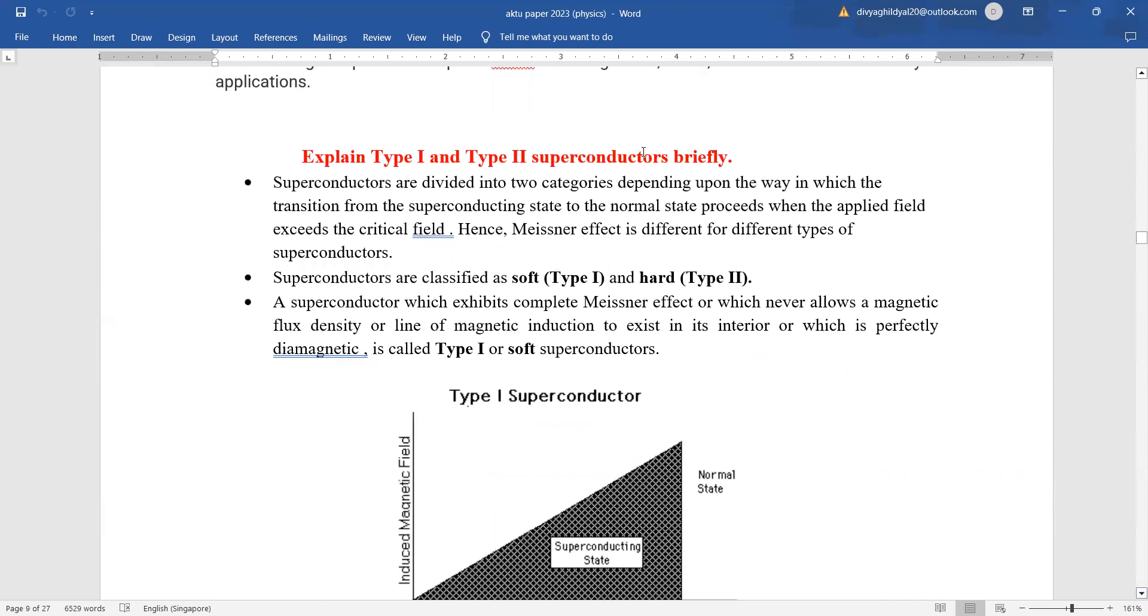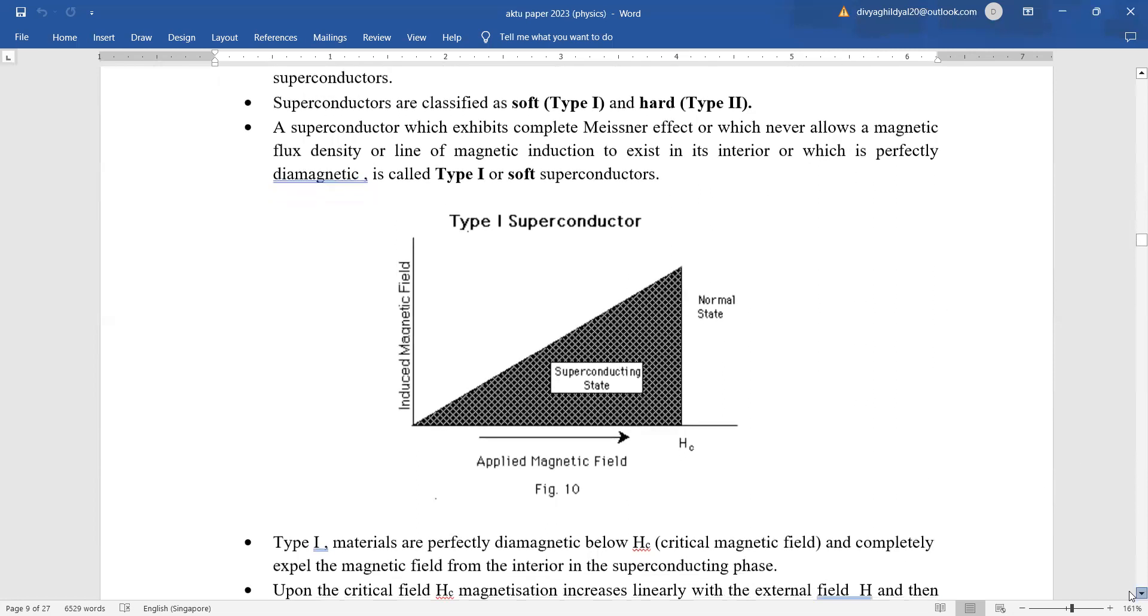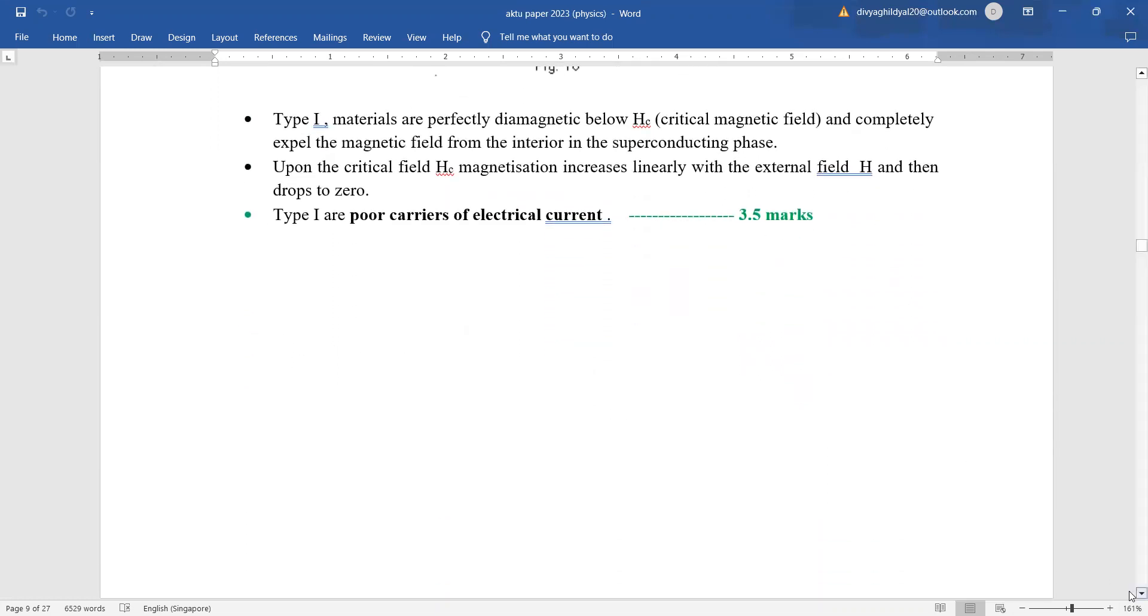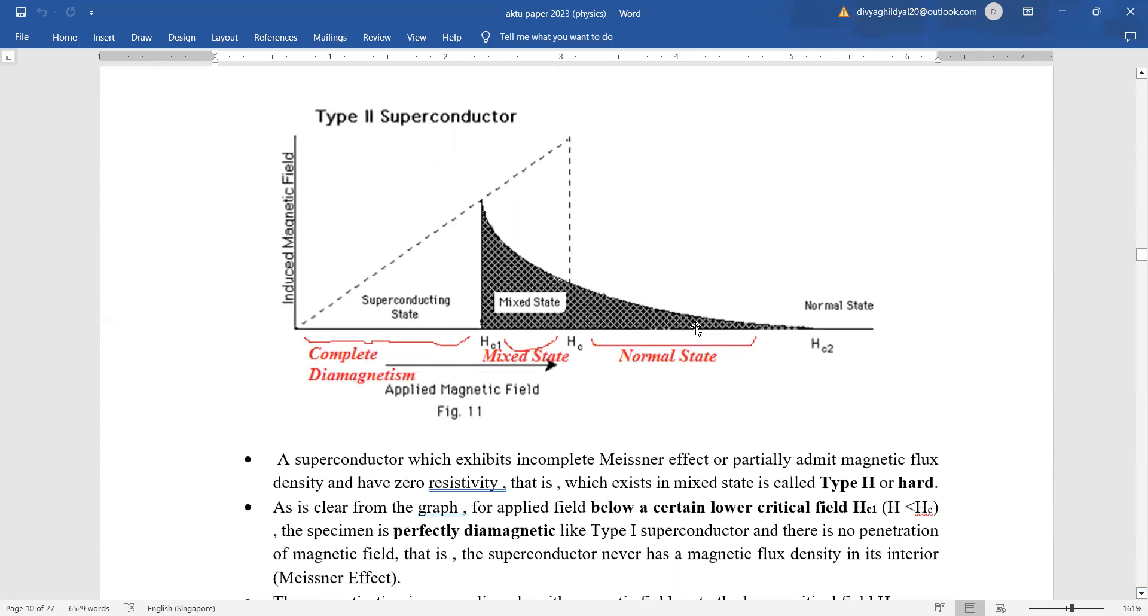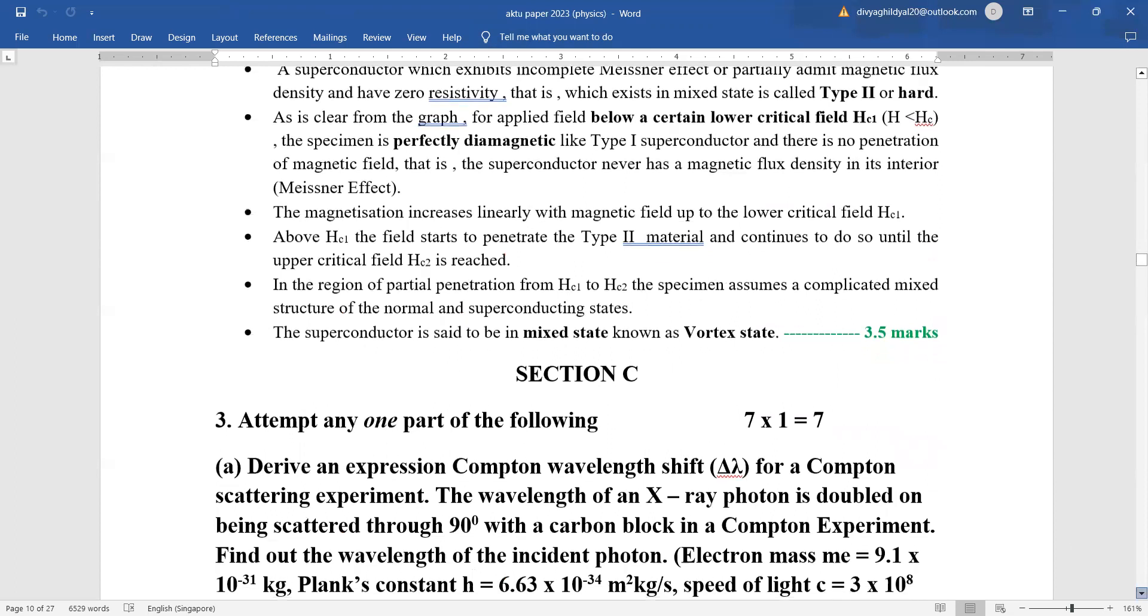Explain type 1 and type 2 superconductors in detail. This question is theoretical. Try to draw the diagram first of type 1 superconductor. Then show that they are the soft types. They are following the complete Meissner effect. They are showing the diamagnetic properties. That will fetch you three and a half marks out of seven. For type 2, draw the diagram. In the diagram itself, try to show the points that it is showing complete diamagnetism till one critical magnetic field. Then it shows a mixed state and then the normalized state. They are the hard type of superconductors. They do not return back to their normal state easily.